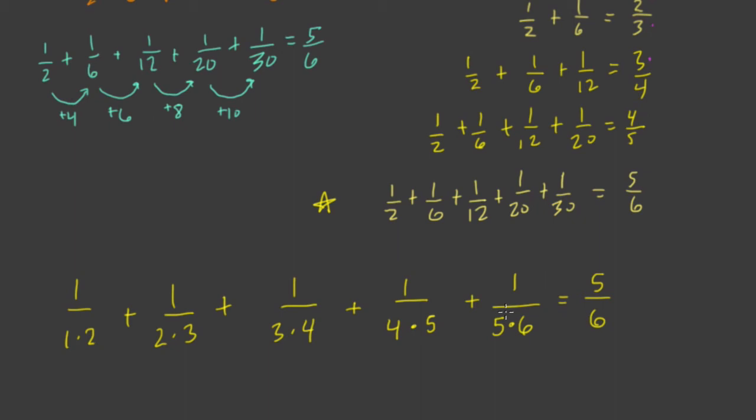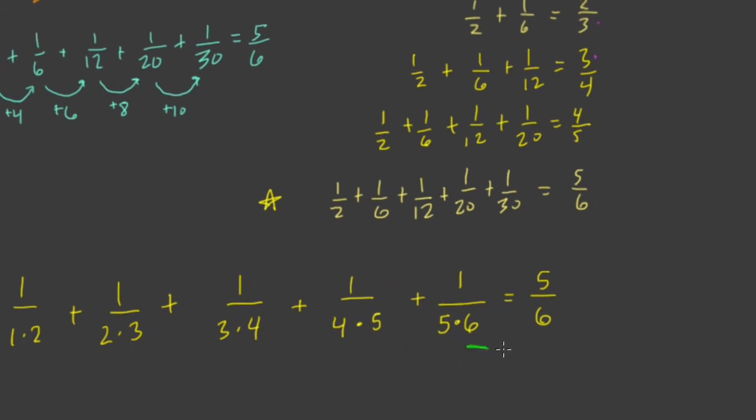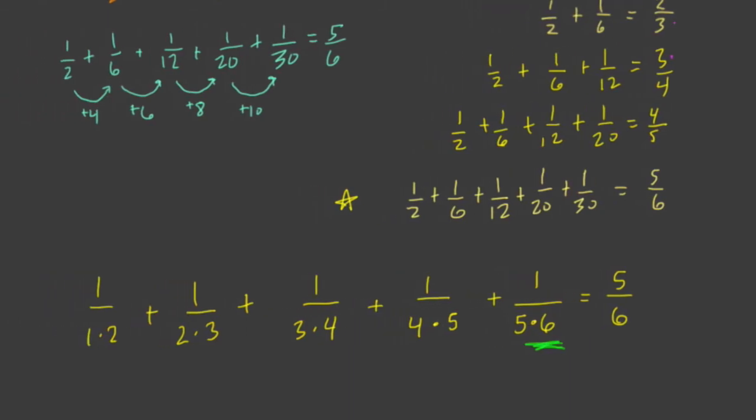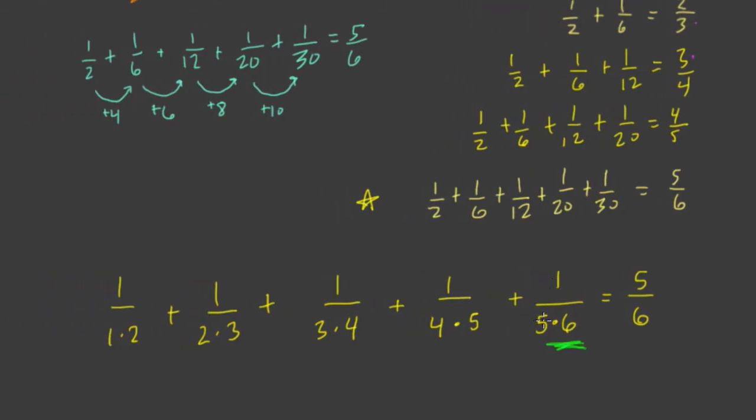So this is a little bit easier to think about now because if we add up to the thirtieth, this is the thirtieth right here, what happens? If we add up to the thirtieth, we get one over five, one over five times six, and the answer is five over six. When we add up to the twentieth, the twentieth is one over four times five, so the answer is just four over five.